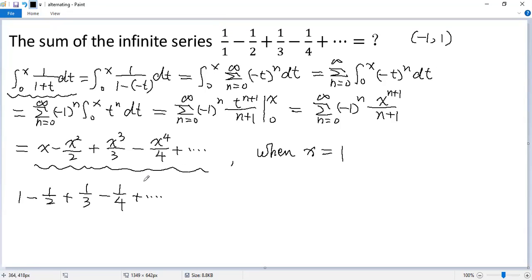It is convergent by the alternating series test. So this infinite series equals from 0 to 1, 1 over 1 plus t dt. Now we can integrate this one. The antiderivative would be ln absolute value 1 plus t, and then evaluate at 1 and 0. When t equals 1, we get ln 2. When t equals 0, we get ln 1. Because ln 1 equals 0, so the final answer would be ln 2.